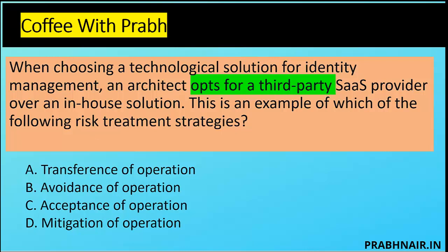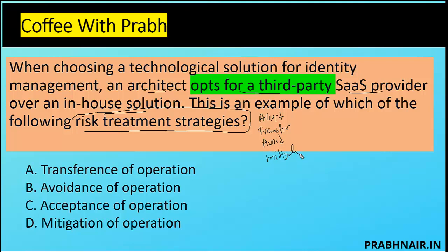Next coffee shot: when choosing a technological solution for identity management, an architect opts for a third-party SaaS provider — for example, Office 365 or Google — because there is no in-house capability. So this is an example of which risk treatment strategy? We have four types: accept the risk, transfer the risk, avoid the risk, or mitigate the risk. In this case we are the customer with no in-house skills, so we decided to use a cloud-based solution.